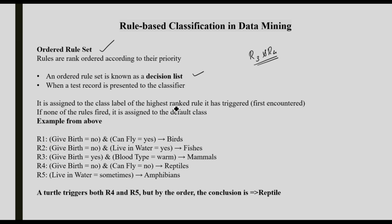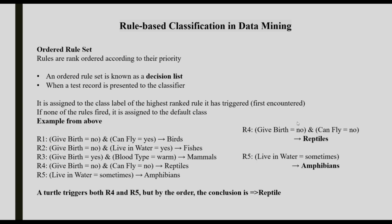In a Decision List, a record is assigned to the class label of the highest-ranked rule it has triggered. For example, the turtle triggers both R4 (reptiles) and R5 (amphibians). R4: give birth = no, can fly = no → reptiles. R5: live in water = sometimes → amphibians. By the order of the Decision List, the conclusion is reptiles, since R4 is ranked higher.